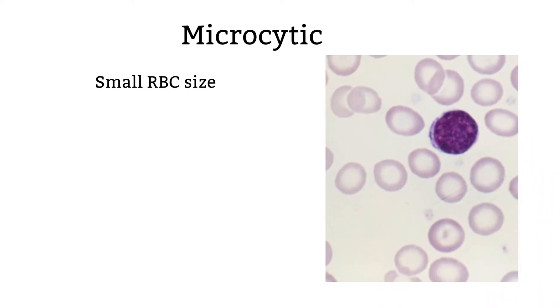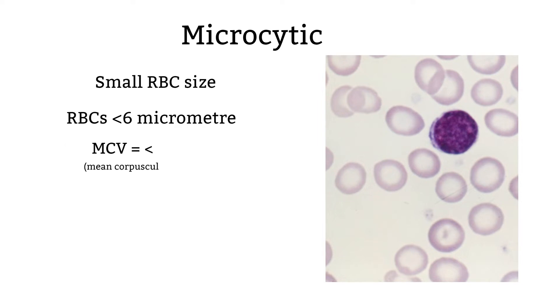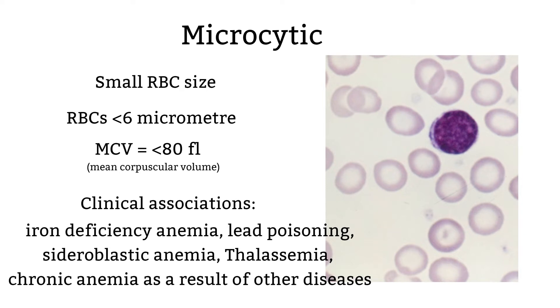Microcytic is a term used to describe small red blood cells. A tip for when you're reviewing your slides: use the small lymphocytes as your reference — the small lymphocyte should be about the same size or larger than your microcytic red blood cells. Microcytic is defined as red blood cells smaller than 6 micrometers, with an MCV less than 80. The hemoglobin usually decreases, which increases the hollow in the center — that term is hypochromic. Microcytic can be associated with iron deficiency anemia and lead poisoning.